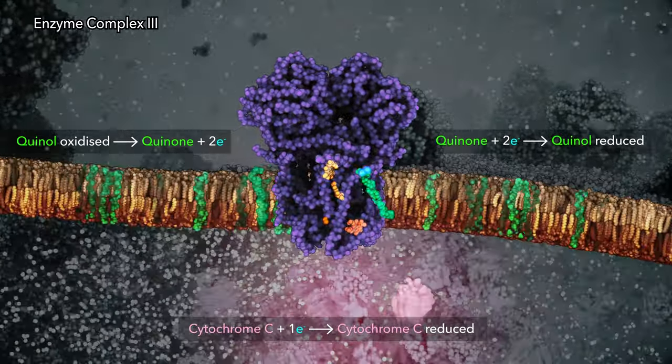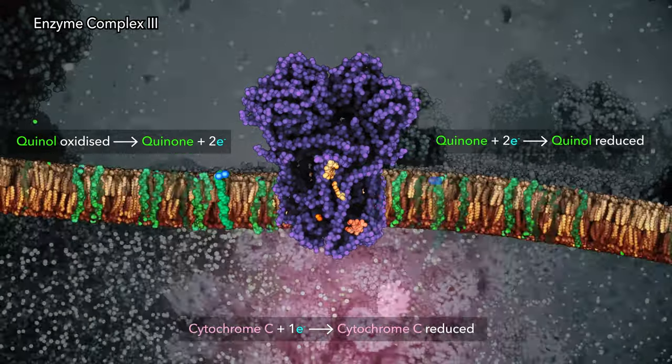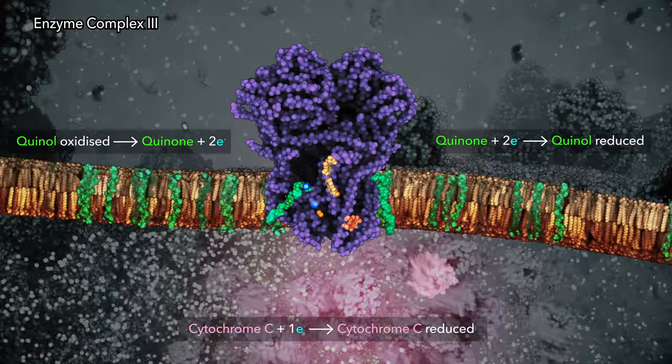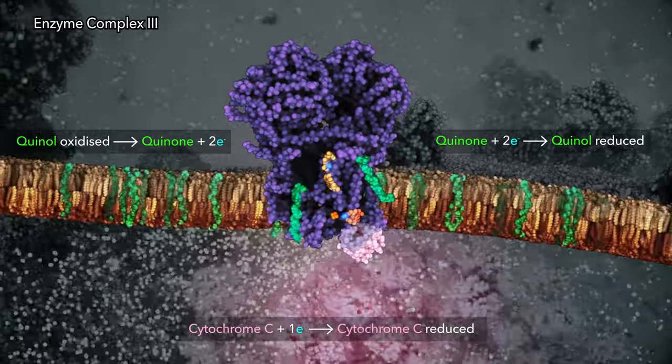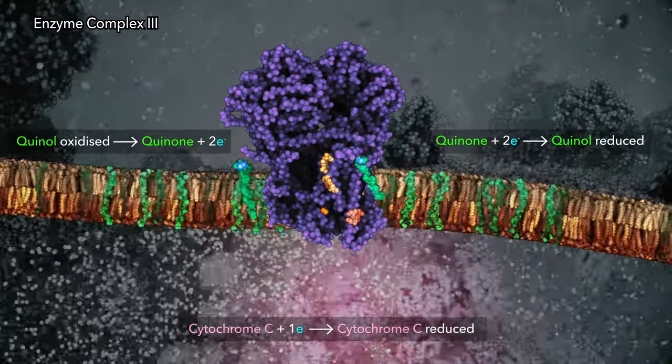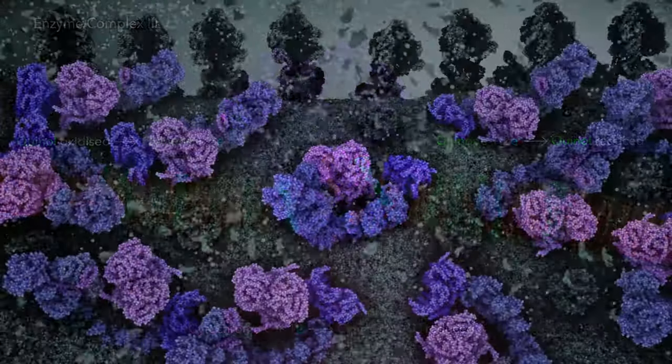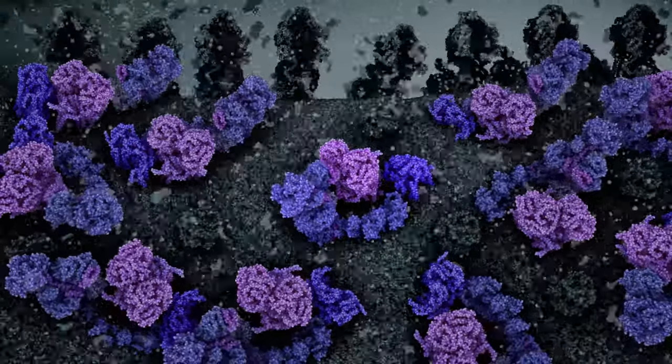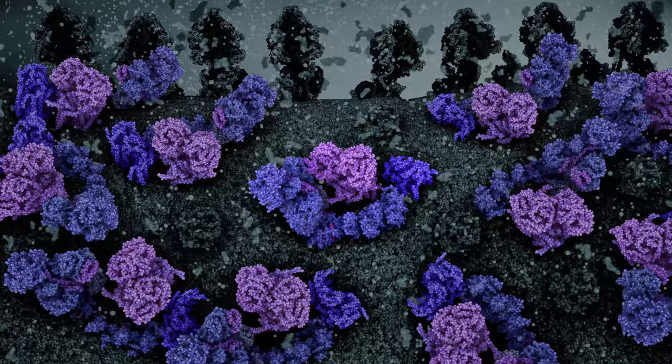A complete reaction cycle of enzyme complex 3 transports four protons across the membrane. Travelling within the intermembrane space, reduced cytochrome C carries the electron to the final step in the electron transport chain.